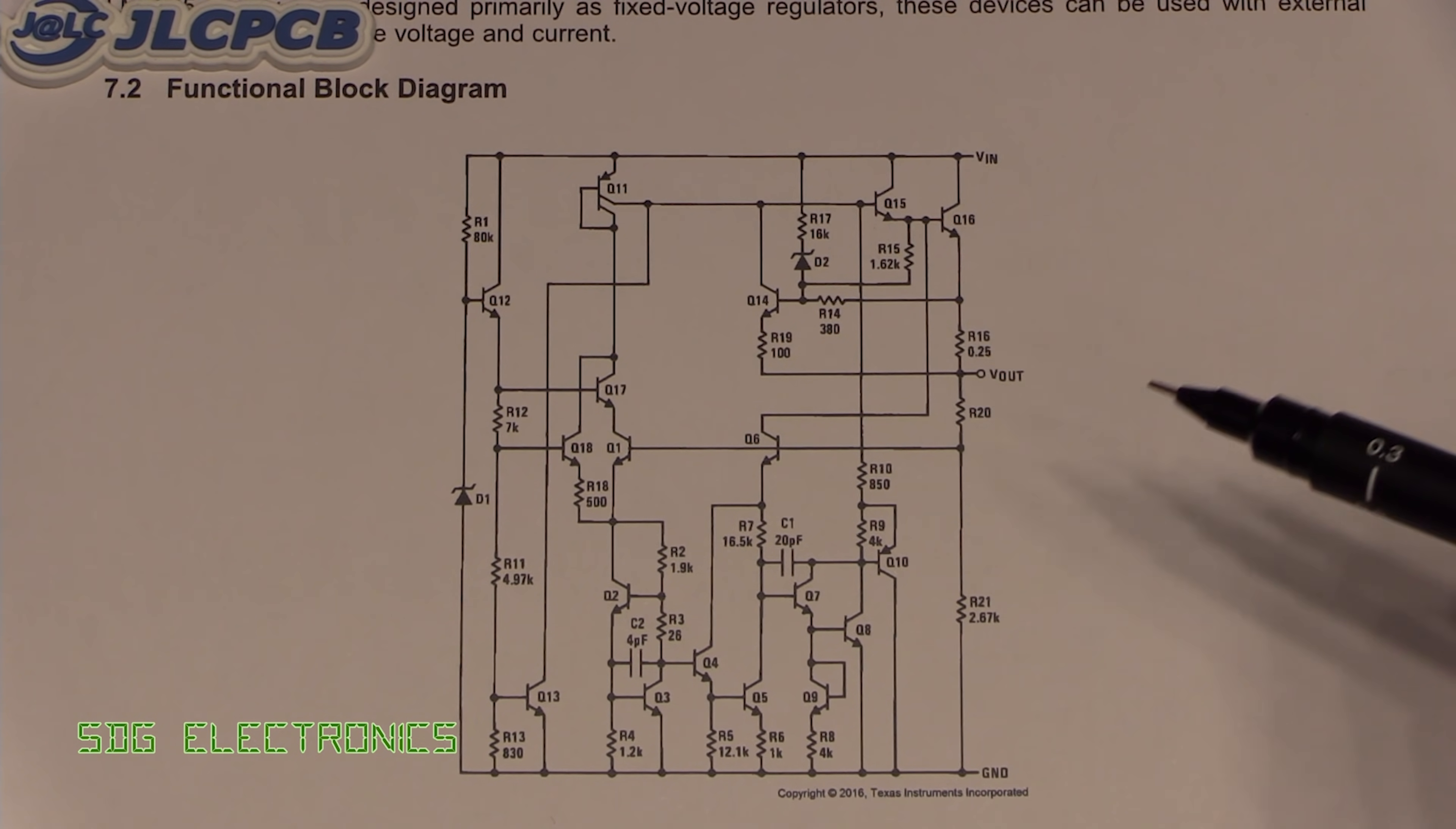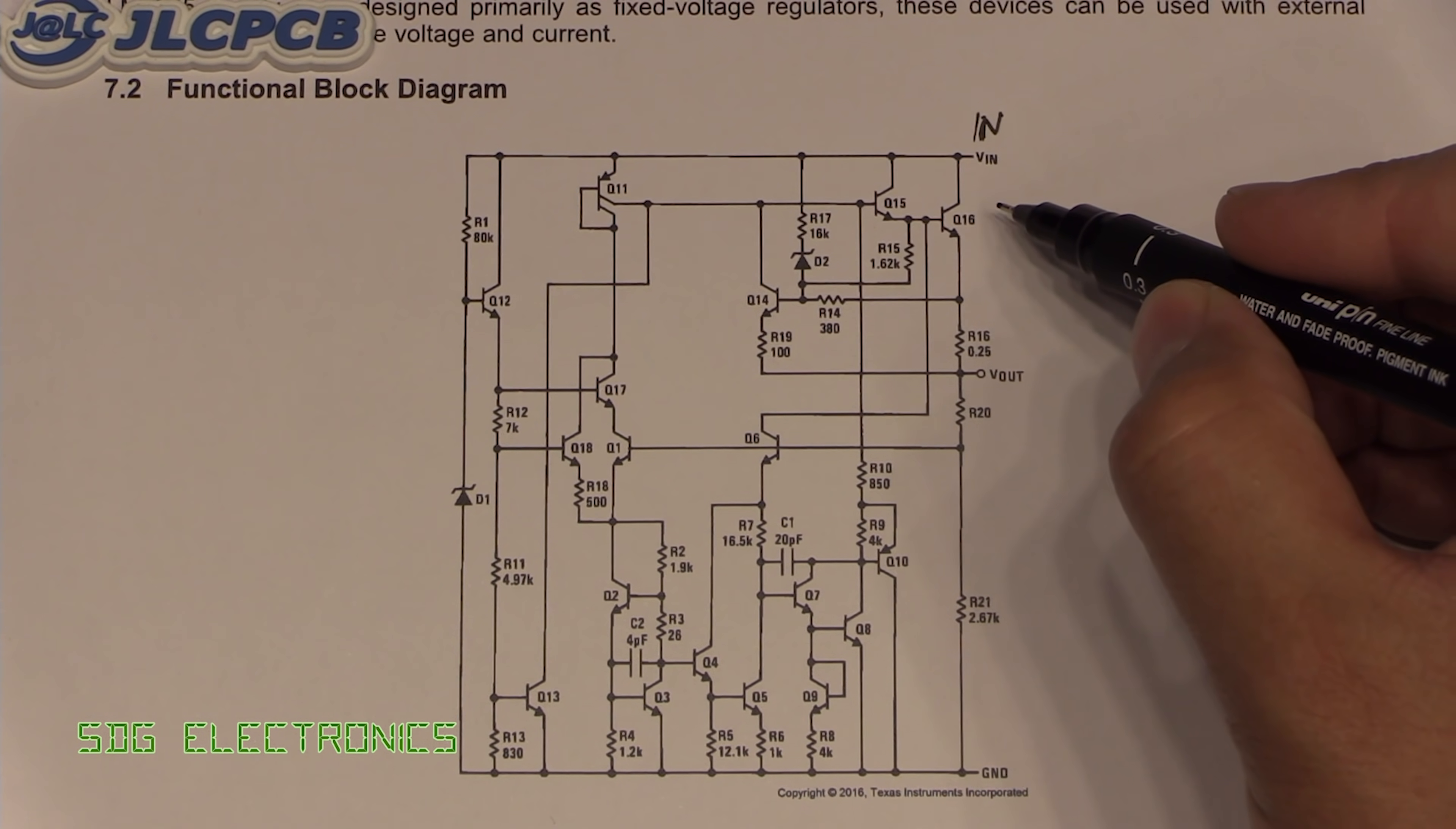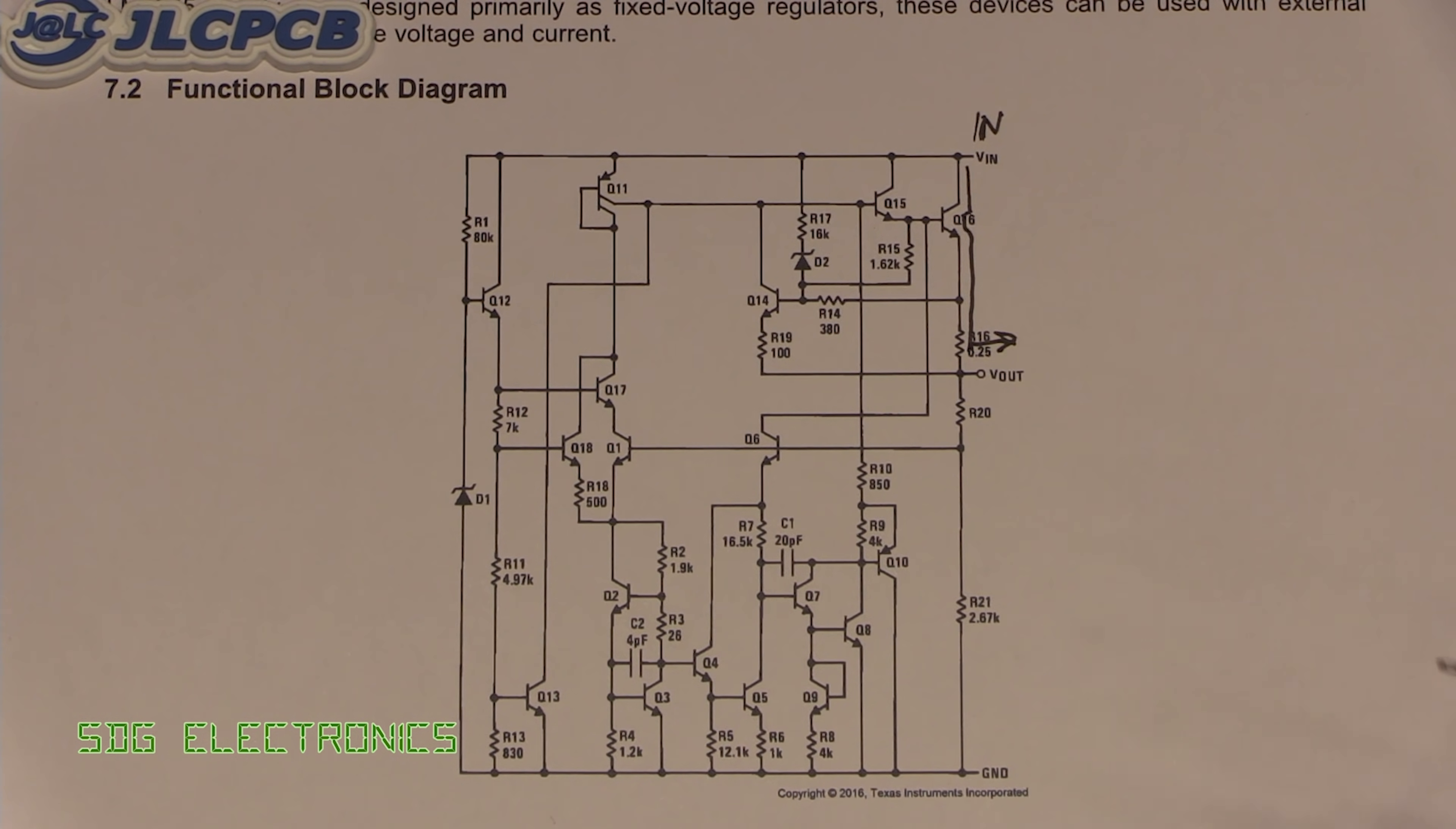If we look at what we've got in the LM7805, we've got our positive supply rail here, our input, ground down here, and this is our output. Basically we have an op amp and some compensation, and this is our pass element through this NPN transistor to the output voltage. Then we have a feedback node with our classic op amp type design, a differential amplifier that's adjusting the pass transistor to adjust the output voltage.